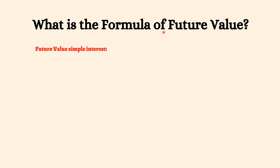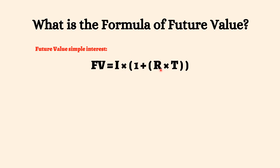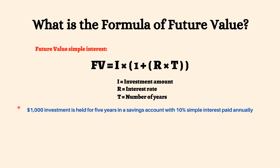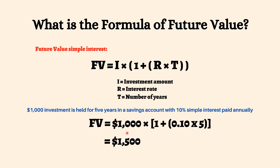What is the formula for future value? Future value using simple annual interest: the future value formula assumes a constant rate of growth and a single upfront payment left untouched for the duration of the investment. If an investment earns simple interest, then the FV formula is: FV equals I into 1 plus R into T, where I is the investment amount, R is the interest rate, and T is the number of years. For example, assume a $1,000 investment is held for 5 years in a savings account with 10% simple interest paid annually.